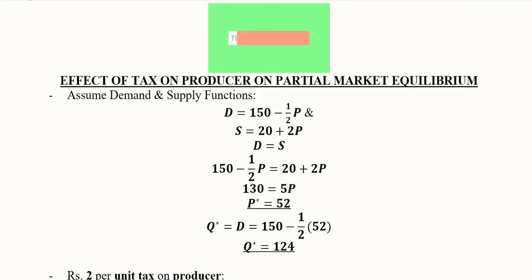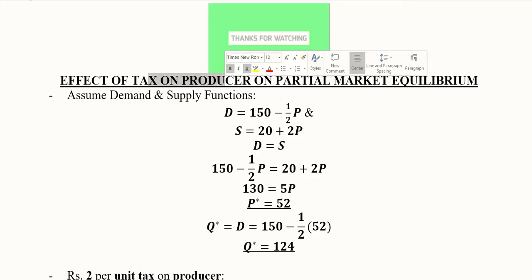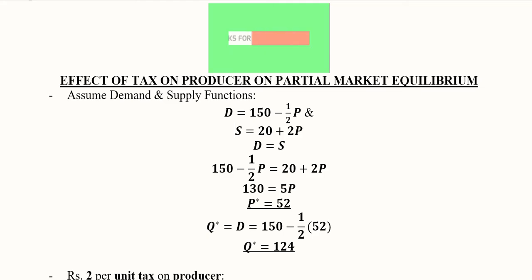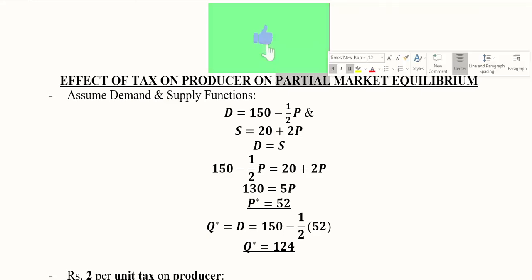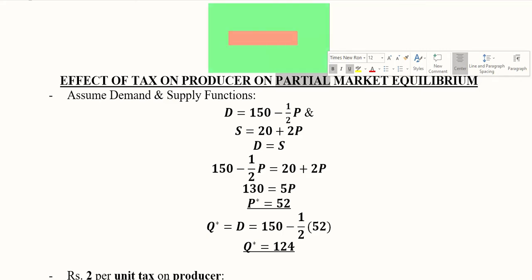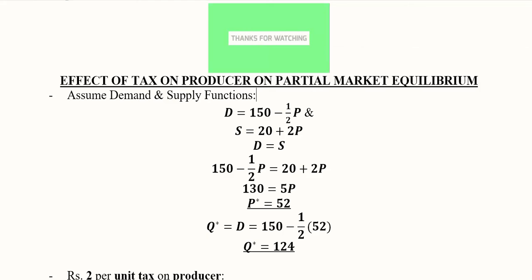Both cases of partial market equilibrium have been addressed here: producer tax as well as consumer tax. In the next video we will extend our analysis from partial market equilibrium to general market equilibrium, where we will not be restricted to one good but will extend to more than one good — that is the distinction between partial and general market equilibrium.